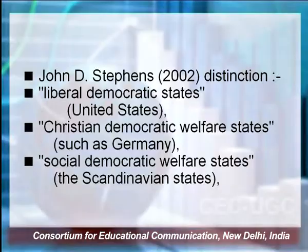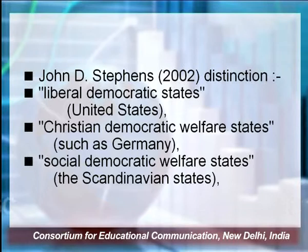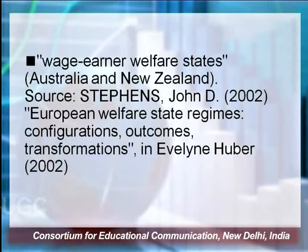Another important classification has been presented by John D. Stephens: liberal democratic states, Christian democratic welfare states, social democratic welfare states, and the wage earner welfare states, from his work on European welfare state regimes — configurations, outcomes, and transformations. For example, the United States represents a liberal democratic state; the Scandinavian states are social democratic welfare states; and Australia and New Zealand represent the wage earner welfare state. Within the very idea of capitalism, there is diversity and complexity.